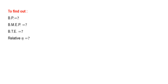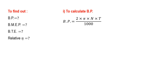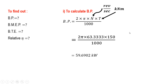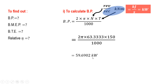We have to find these particular values. First, brake power. Brake power is given as 2πNT divided by 1000. Here we have not included the 60 term because N is already in revolutions per second. The torque is converted to kNm by dividing by 1000, giving units of kNm per second, which equals kJ per second or kW. Therefore, brake power comes out to be 59.69 kW.